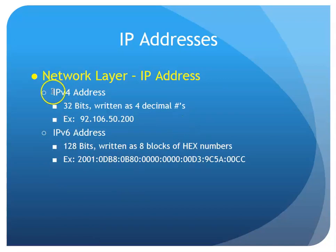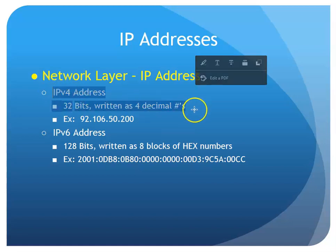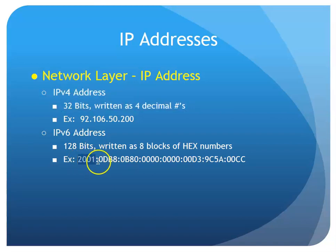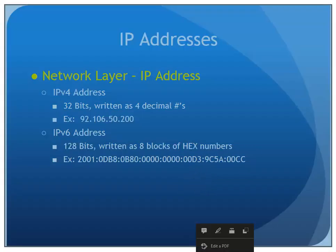There are two types: IPv4 and IPv6. IPv4 is a 32-bit number written as four decimal numbers — for example, 92.106.50.200. We also have IPv6 addresses, written as 128 bits, and we typically use hexadecimal to abbreviate those 128 bits, ending up with eight blocks of hex numbers.